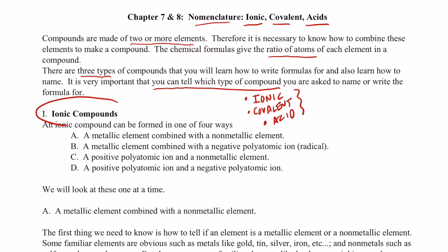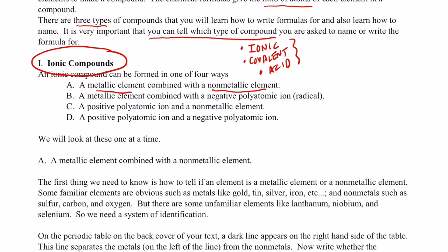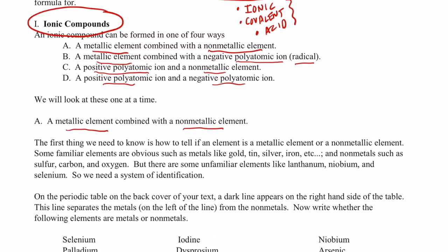Now, we are going to start with ionic compounds. All ionic compounds can be formed in one of four ways. We can have a metal element bonded to a nonmetal, and that's where we're going to start. We can also have a metallic element combined with a negative polyatomic ion or radical. We can have a positive polyatomic ion and a nonmetal, or we can have a positive polyatomic and a negative polyatomic. Don't worry right now about what polyatomic ions are. We're going to concentrate today on a metallic element bonded with a nonmetallic element.